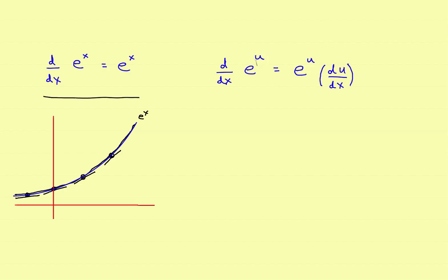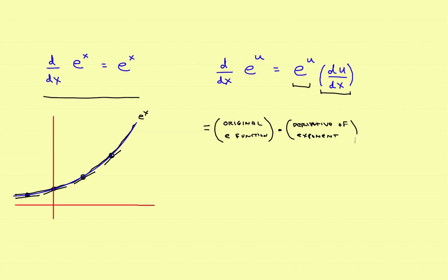Now if the exponent is something more complicated than just a simple x, you can think of it as a chain rule, and the rule changes to this: it's the derivative of the original e-function times the derivative of the exponent. Rather than trying to remember the formula, just think of it like this — the original e-function, then times the derivative of the exponent. So the original e-function times the derivative of the exponent. If you just say it like that, it makes the whole thing a little bit easier.